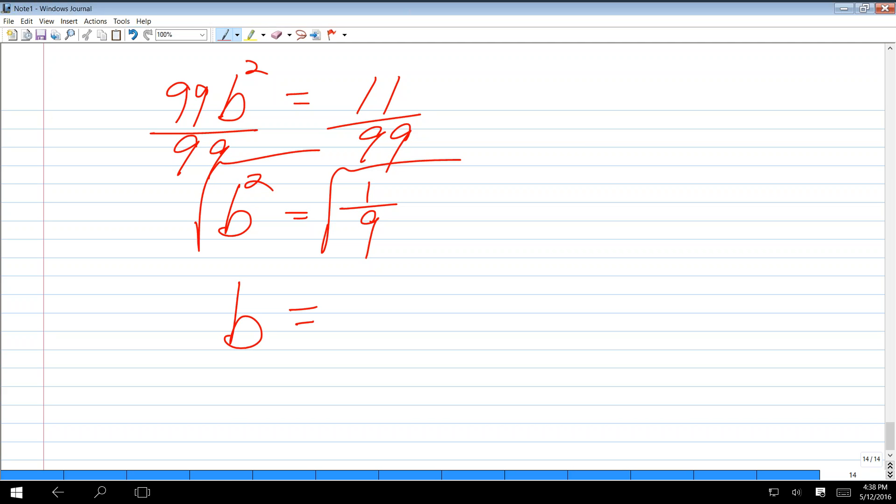11 over 99? Yeah. Now you're going to solve this equation by taking the square root of both sides. When I take the square root of both sides, the left side becomes B. That's my goal. I've isolated B. What's the square root of 1 ninth? If I have the square root of A over B, that's the same as the square root of A over the square root of B. So radical 1 over radical 9. What's radical 1 equal? Just 1. What's radical 9 equal? 3. That's your answer.